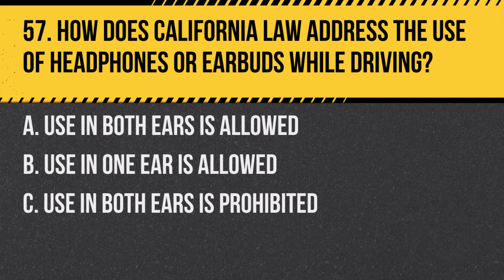Question 57: How does California law address the use of headphones or earbuds while driving? A. Use in both ears is allowed. B. Use in one ear is allowed. C. Use in both ears is prohibited. Answer: C. Use in both ears is prohibited. In California, it's illegal to wear headphones or earbuds covering, resting on, or inserted in both ears while driving.